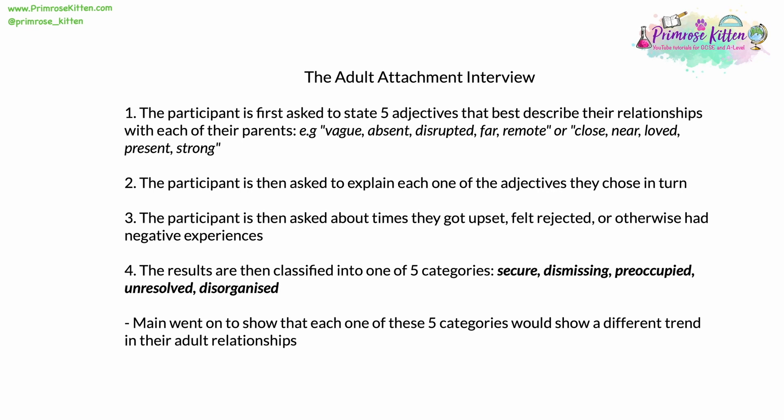In the first stage, the participant is asked to state five adjectives that best describe their relationships with each of their parents — their mother and their father. For example: vague, absent, disrupted, far, and remote; or alternatively: close, near, loved, present, and strong. In the second stage, the participant is asked to explain each of those adjectives in turn. In the third stage, the participant is asked about times they got upset, felt rejected, or otherwise had a negative emotional experience in childhood.